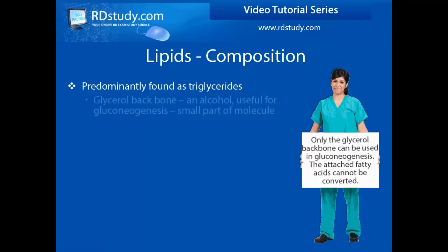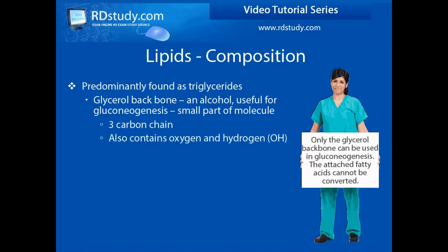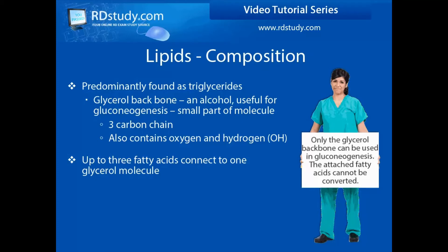Triglycerides are composed of a glycerol molecule and three fatty acid molecules. The glycerol backbone is composed of a simple three-carbon chain with bonds to hydrogen and oxygen. It is considered an alcohol and is the only portion of the triglyceride that can be converted into glucose in the event that the body needs to manufacture it from fat stores.